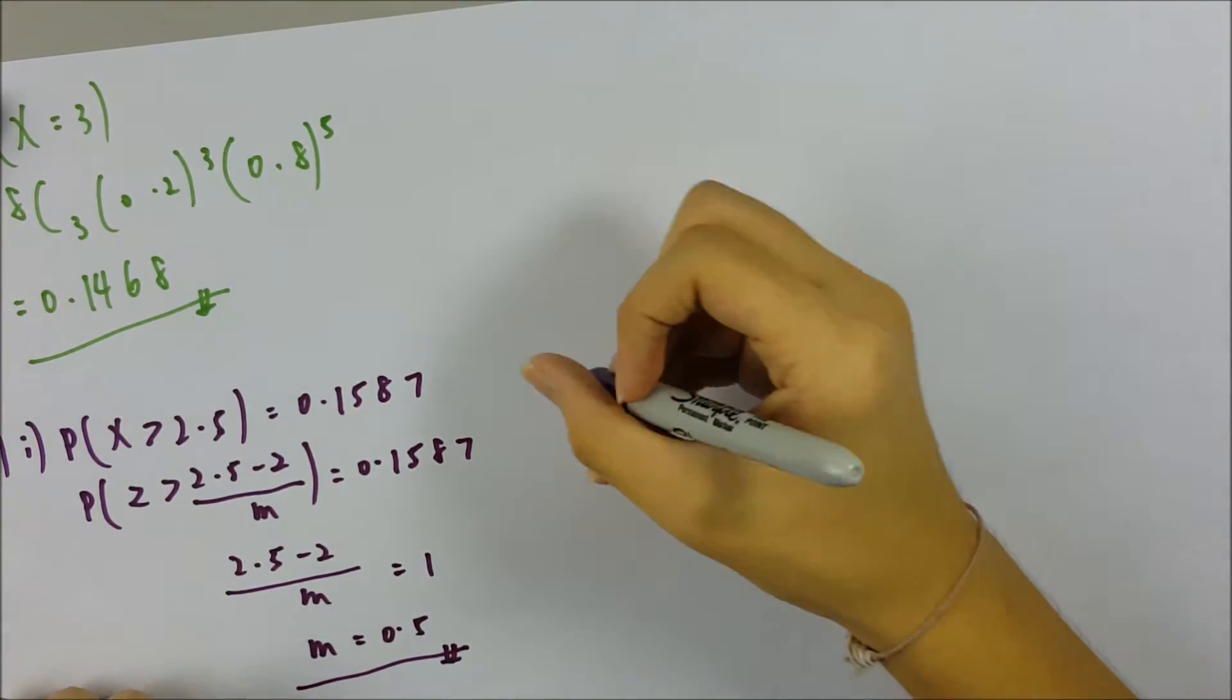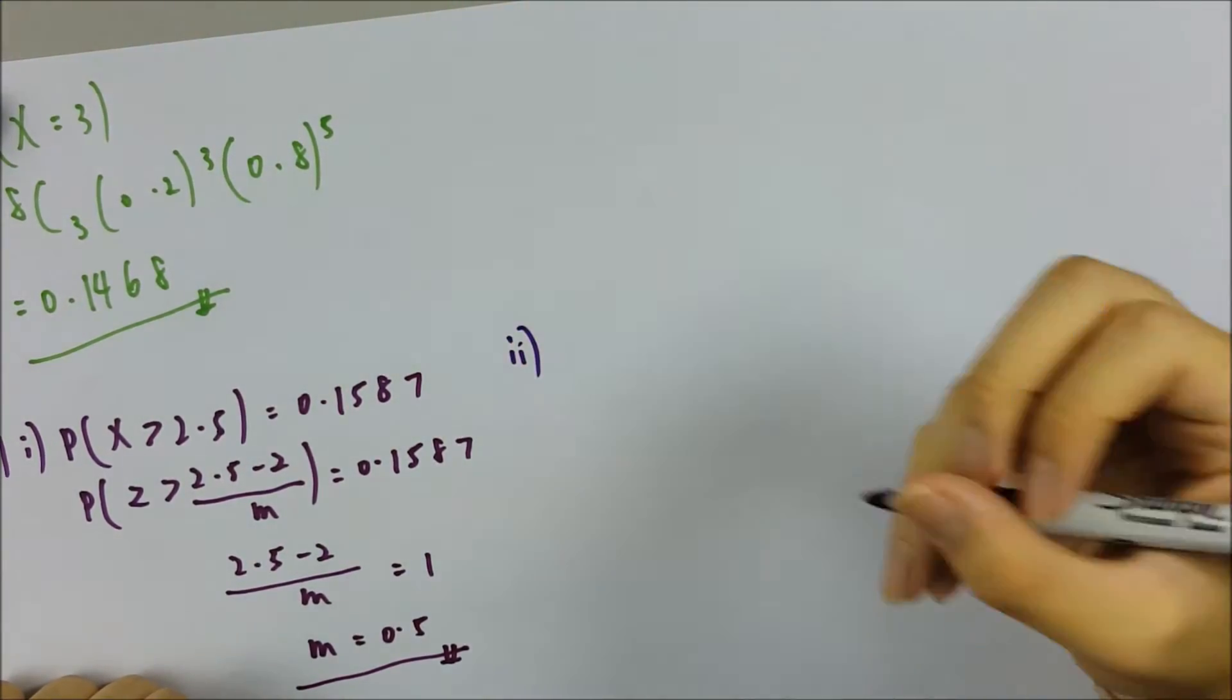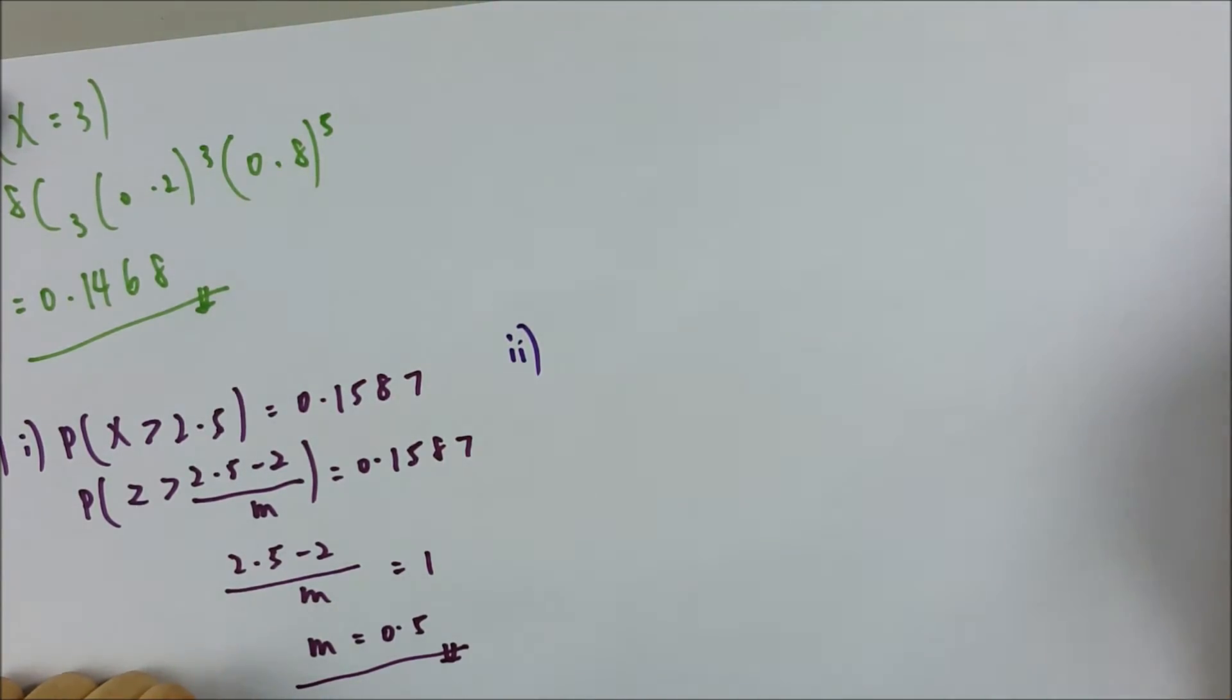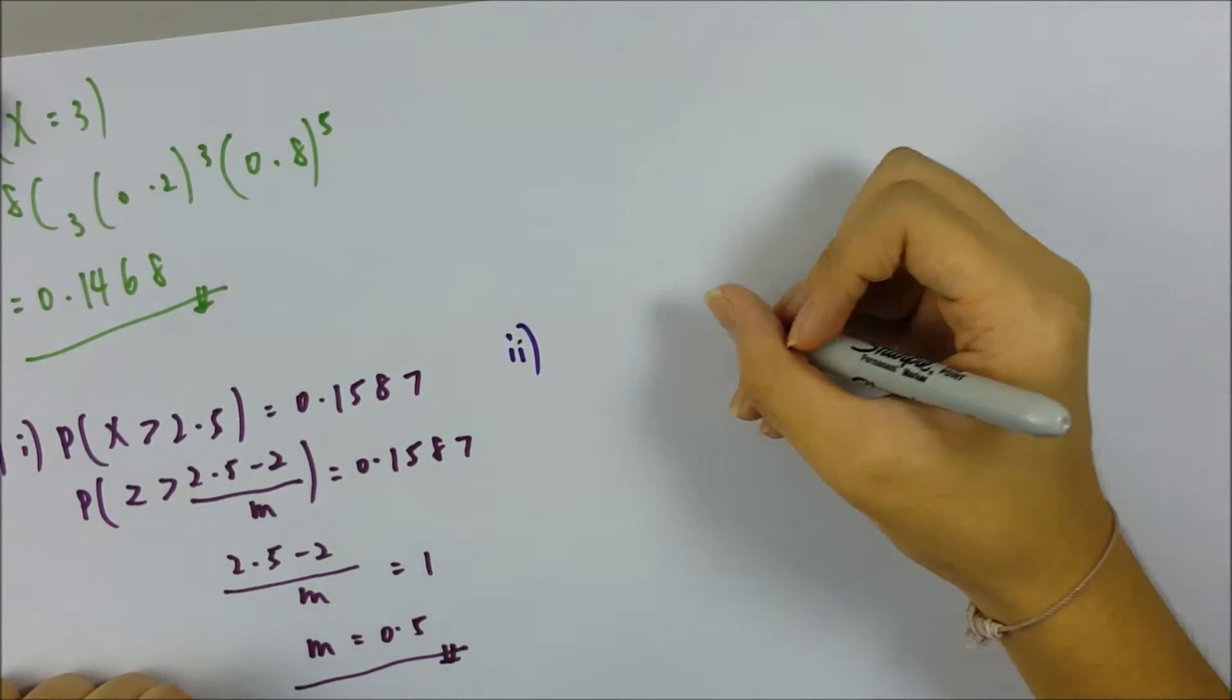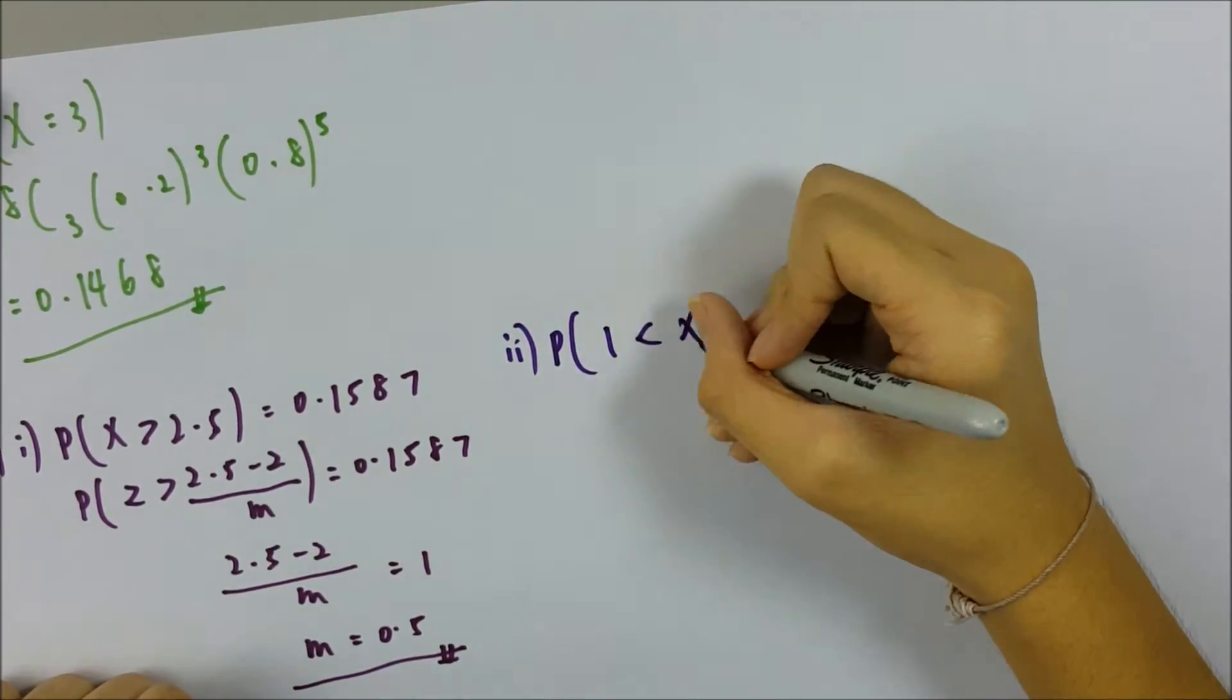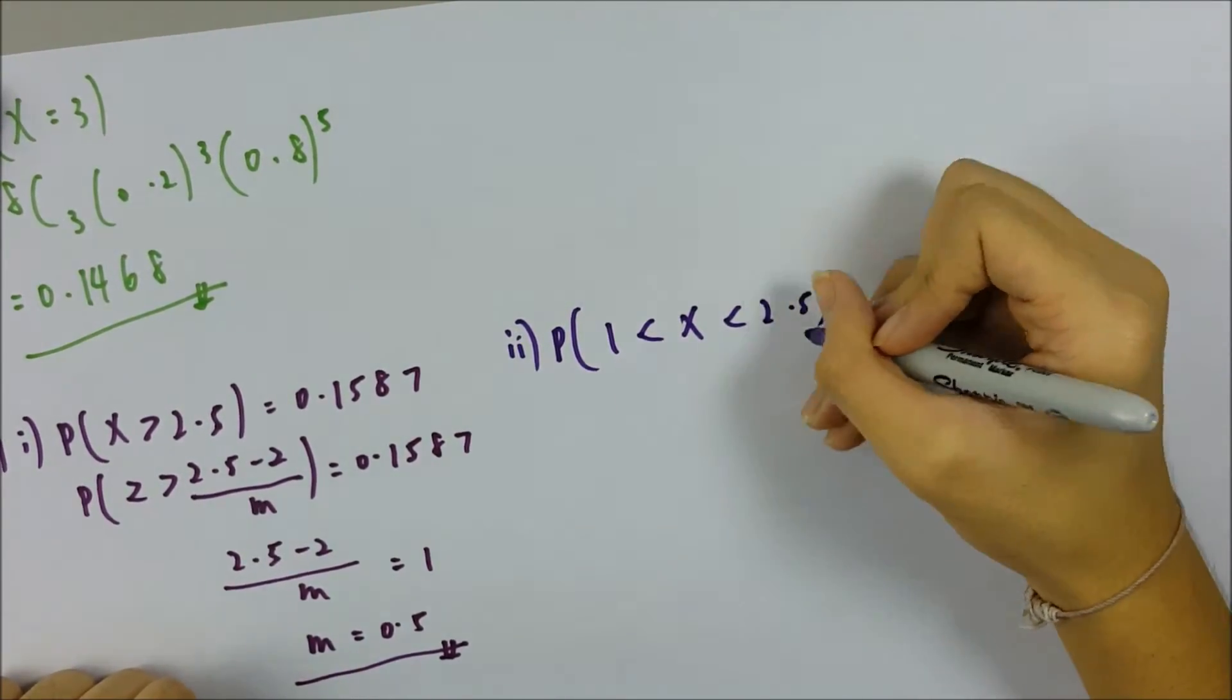Okay, the mass between 1 kg and 2.5 kg. P(1 < X < 2.5). So you want to find the probability of the normal distribution.